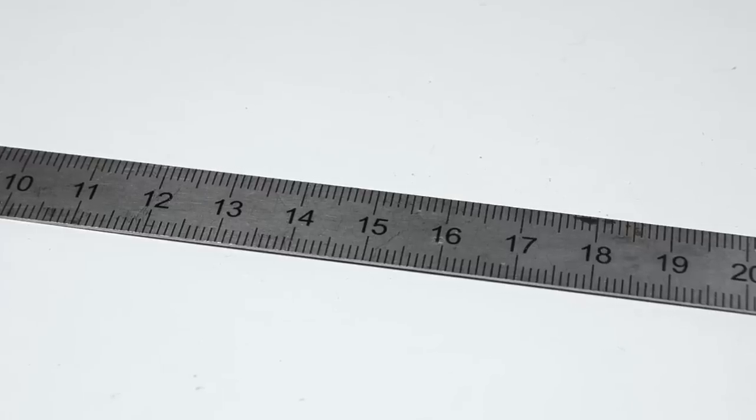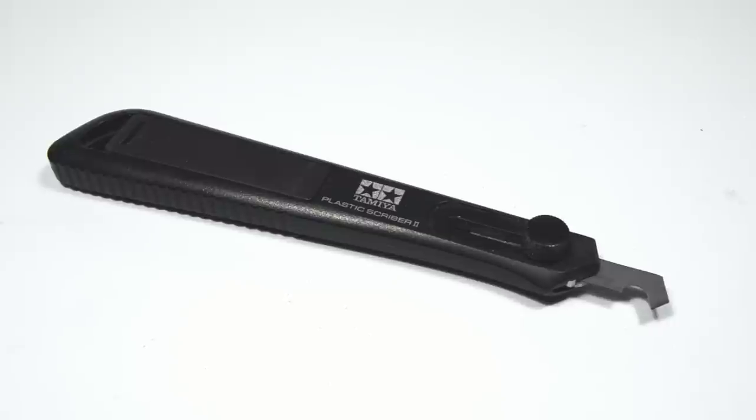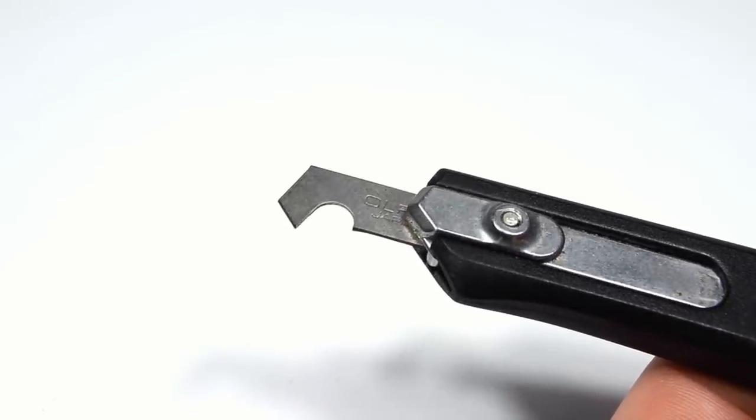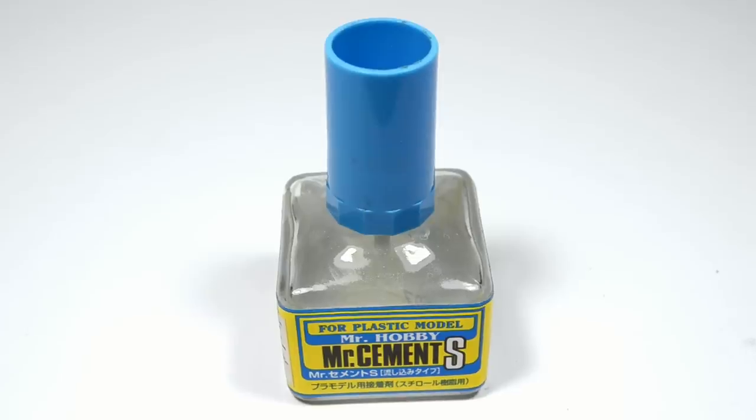Let's start with some tools. To get your model prepped for welding you'll need a steel ruler, scribing tool, it doesn't have to be Tamiya but I like it because it makes nice wide grooves, hobby knife, and plastic cement.